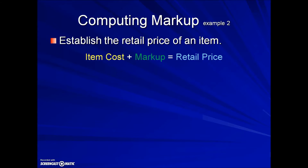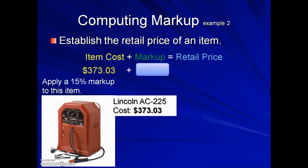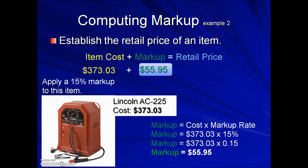Here's another example asking us to determine the retail price. We have a portable welder with a cost of $373.03. The markup rate that this business is using is 15% of the cost, so our calculation will entail taking the cost times the markup rate: 373.03 times 0.15, giving us a markup amount of $55.95. Adding those two together will give us the retail price, or selling price, of $428.98.